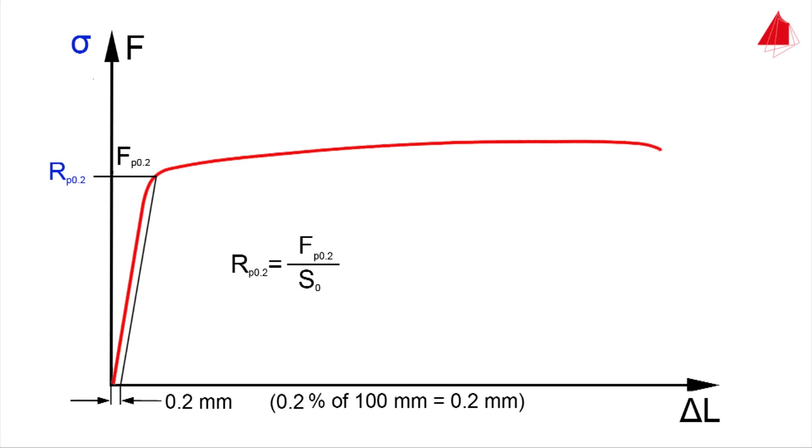Tensile strength, percentage elongation after fracture, and percentage reduction of area are calculated in the same way as in the first test.